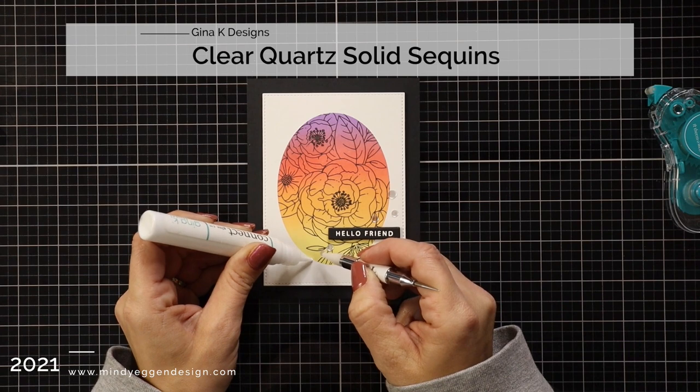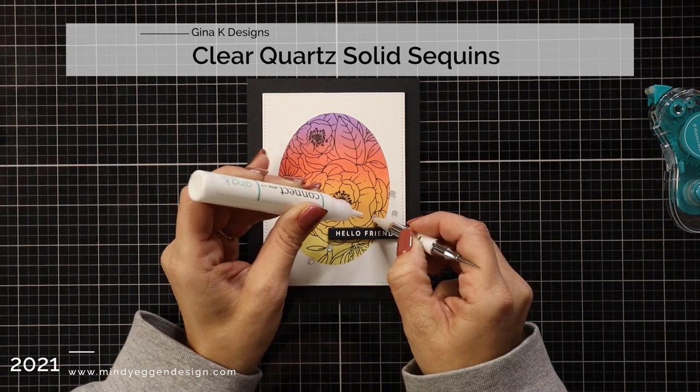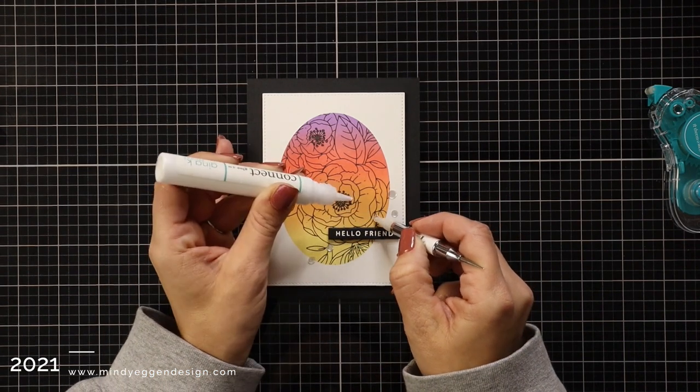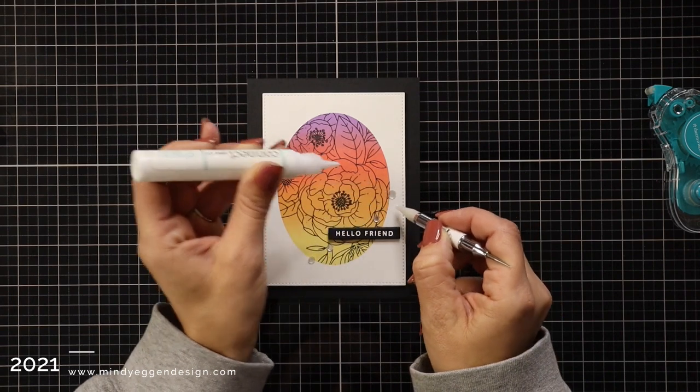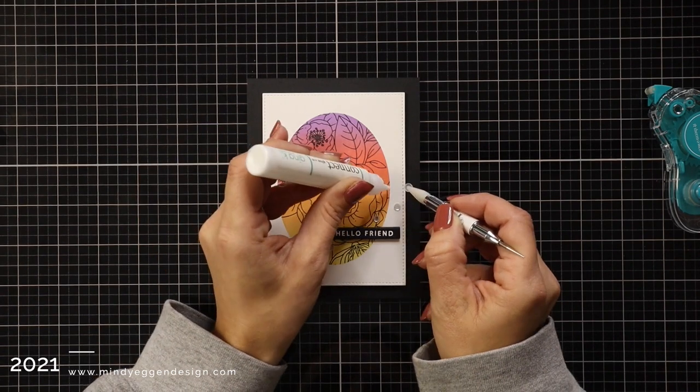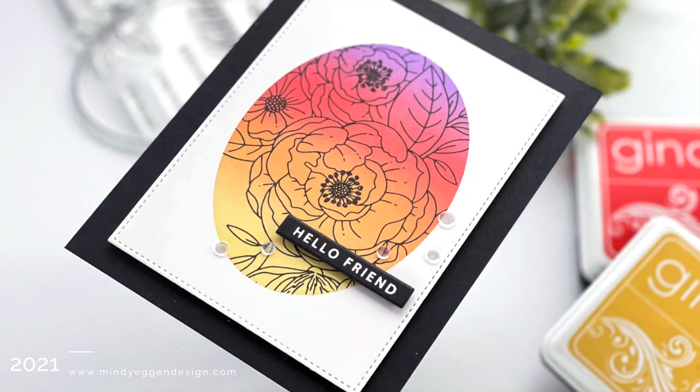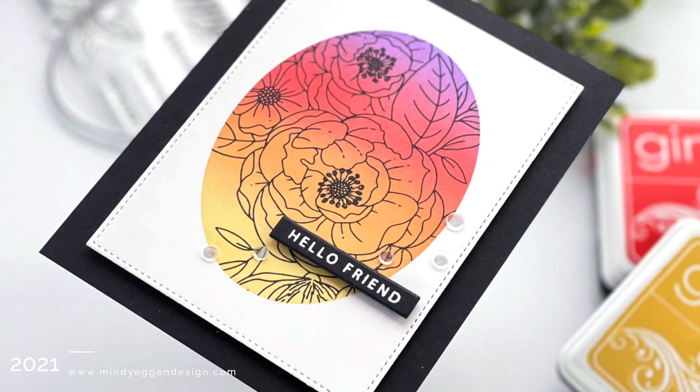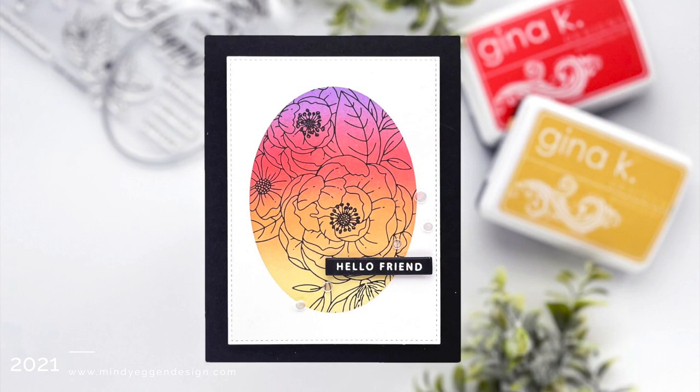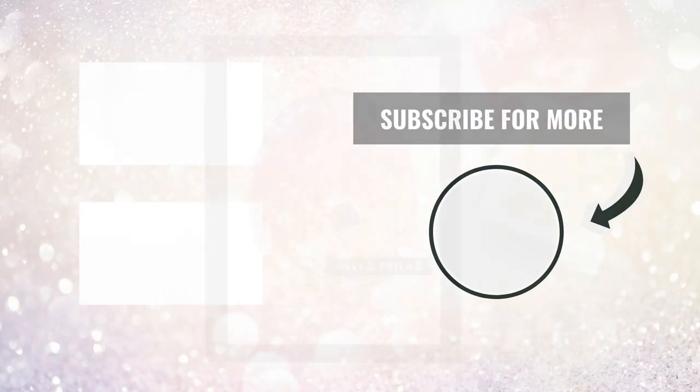Then I'm going to finish it up with some clear quartz solid sequins and connect glue from Gina K Designs. That's going to finish up my card project for today. I hope this helps give you some inspiration on how to use the masking magic and the Master Layouts 9 die set. I will have all of the supplies listed down below in the video description and over on my blog as well. Thank you so much for spending time with me today, and here are a few other videos I think you might enjoy.